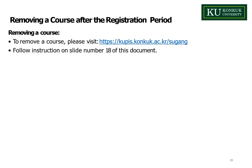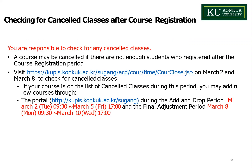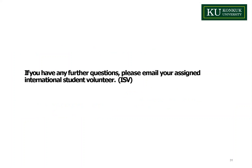This slide is about removing a course after the registration period. If you want to remove a course, visit the provided link and follow the removing courses section. You are responsible for checking for any canceled classes after the add/remove period — a course may be canceled if not enough students registered. Visit the link on March 8th at 9 a.m. to check for canceled classes. If your course is canceled, you may add courses through the portal during the final adjustment period from March 8th to March 10th. If you have any further questions, please contact your assigned international student volunteer. Thank you for listening and good luck with your course registration!